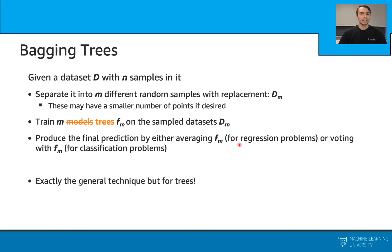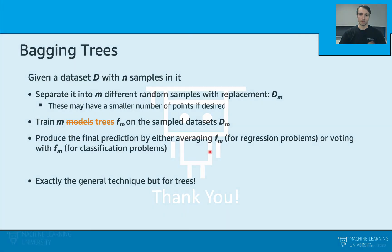How does this work with trees? This is exactly the same for trees. When we apply Bagging with trees, our models simply become trees, and the rest of the algorithm works just like that.